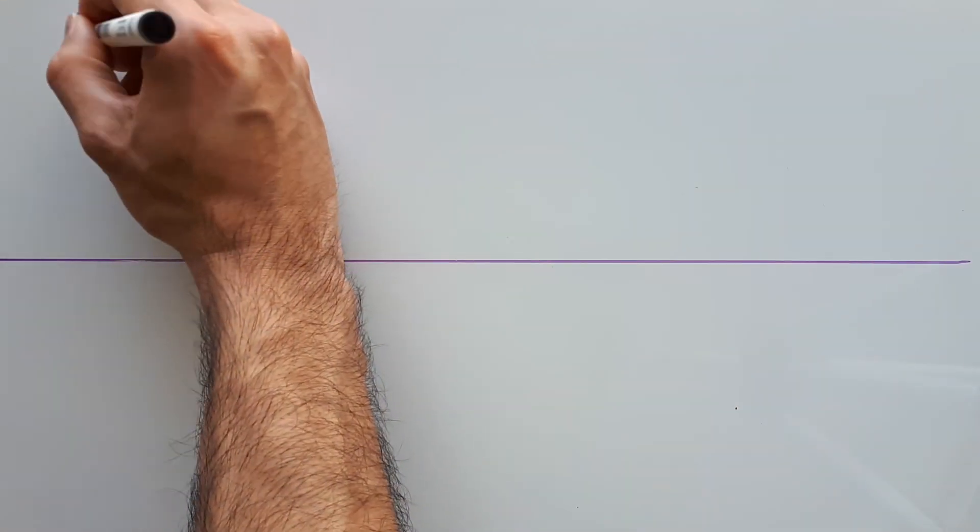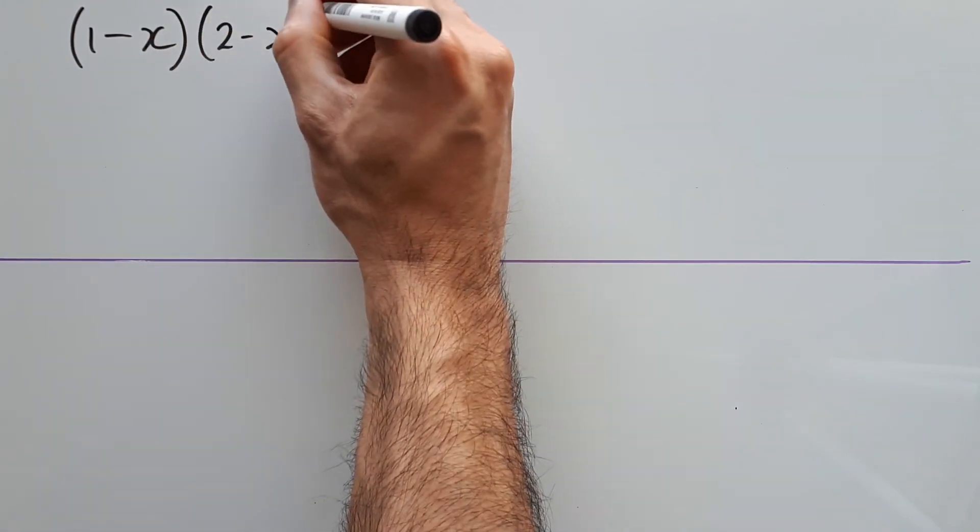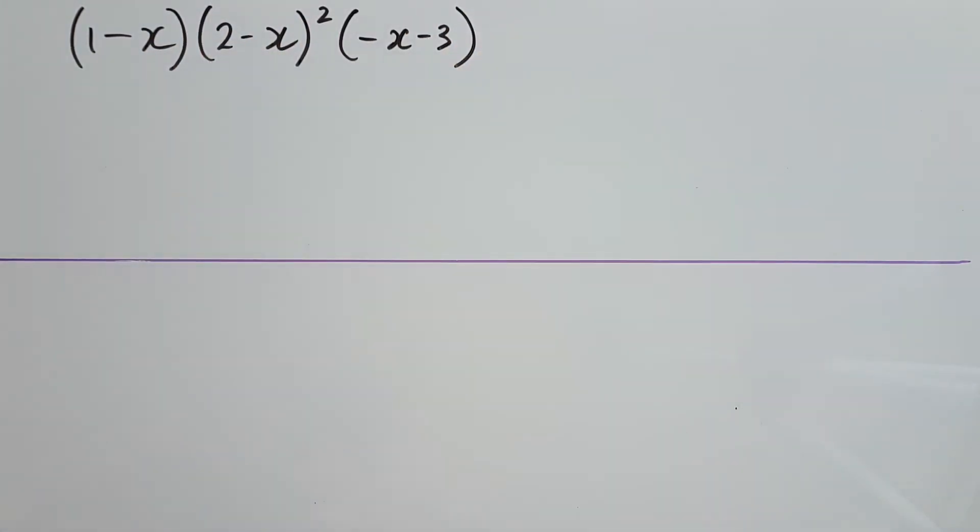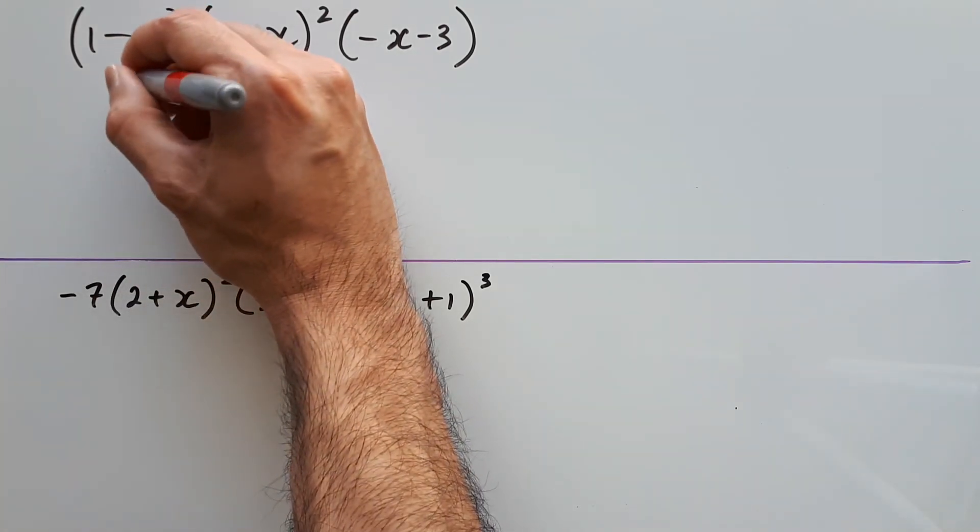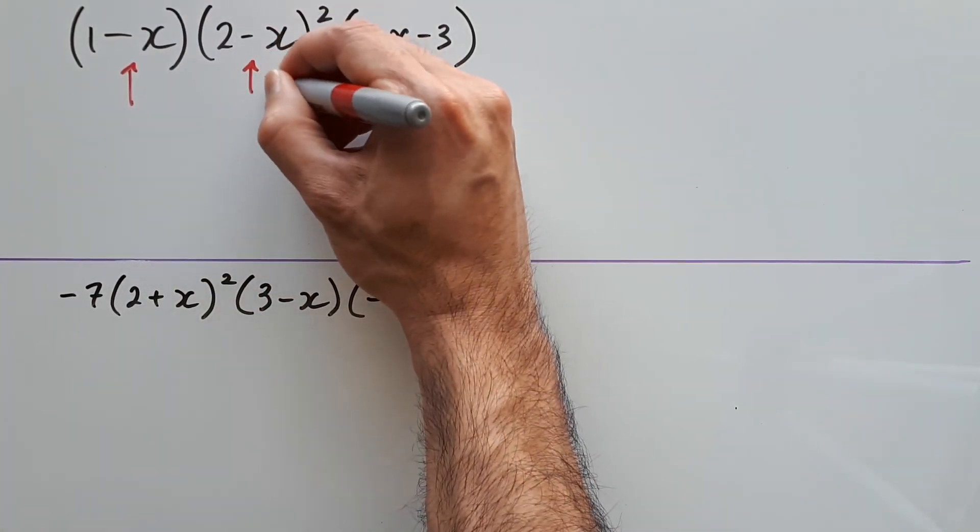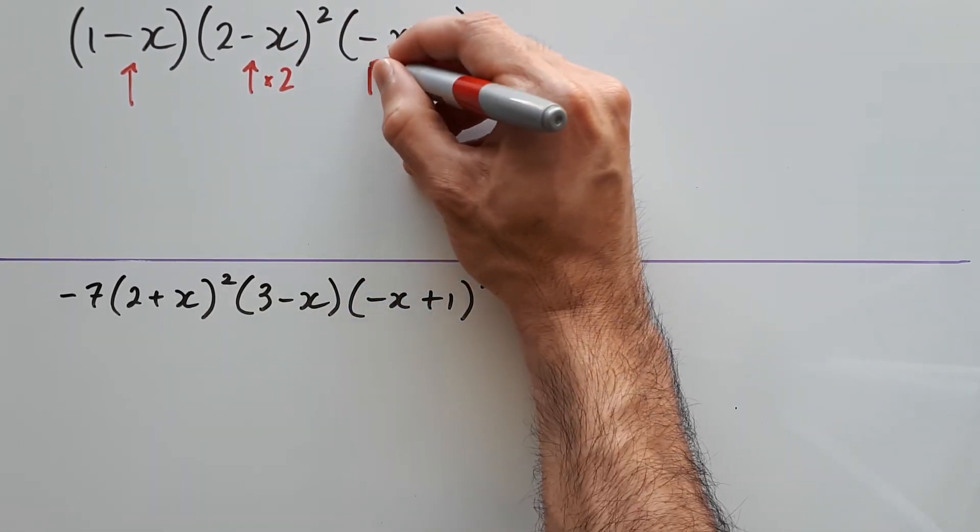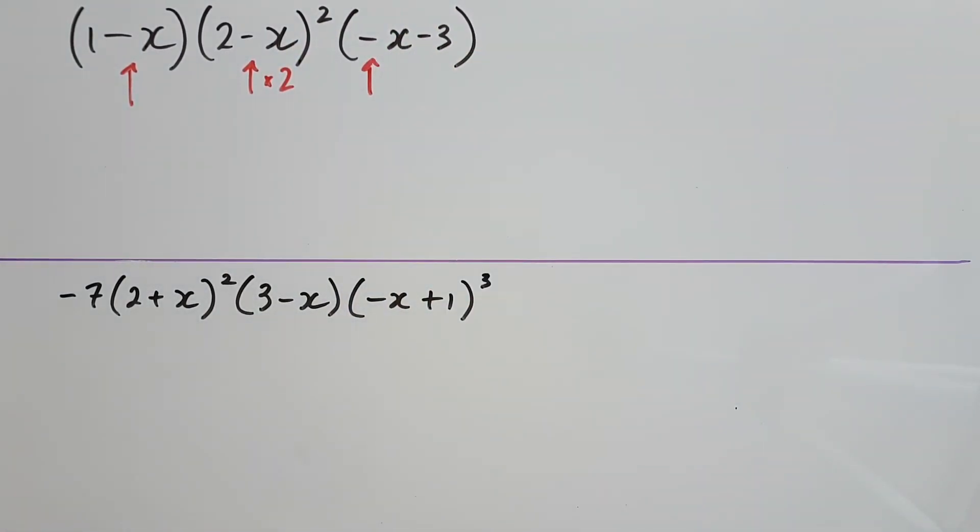For our next polynomial, we have 1 minus x times 2 minus x squared times negative x minus 3. This is a fourth degree polynomial, and what we notice is that there is a negative inside the first bracket, two negatives inside the second bracket, and one negative inside the third bracket. And we're ignoring the negative 3, because that has nothing to do with x. So in total, there are 4 negatives here, making a positive, meaning the graph will finish upward.